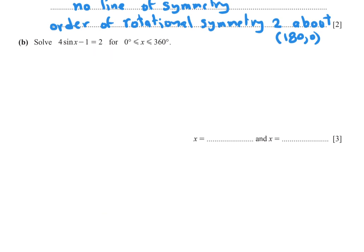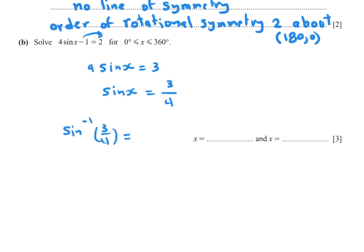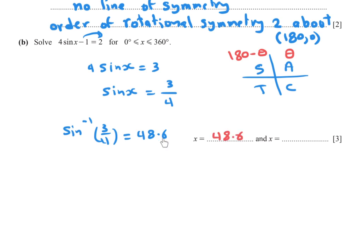Part (c): Solve 4 sin x minus 1 equals 2 for 0 less than or equal to x less than or equal to 360. Rearranging: 4 sin x equals 3, so sin x equals 3/4. The acute angle is sin inverse (3/4) equals 48.6 degrees. Since sin is positive in the first and second quadrants, the two solutions are x equals 48.6 degrees and x equals 180 minus 48.6 equals 131.4 degrees.